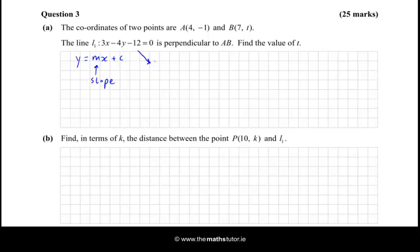OK, so I'll rearrange this so I have -4y = -3x + 12, which means divide across by -4, so y = (-3/-4)x + (12/-4), and just tidy that up. So y = (3/4)x - 3. So we have the slope now of L1.